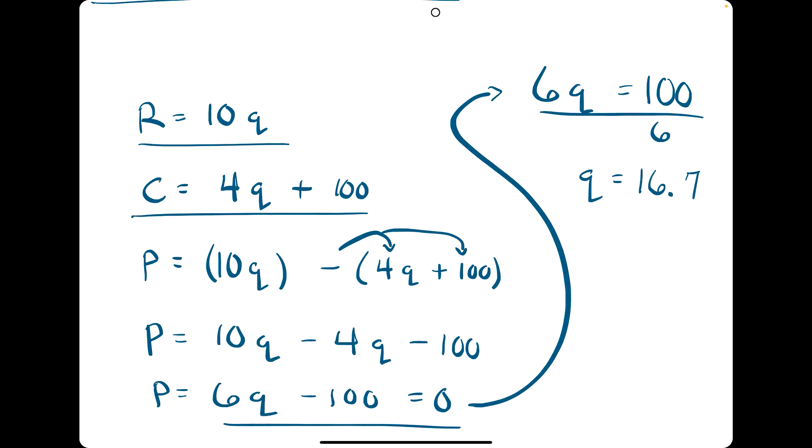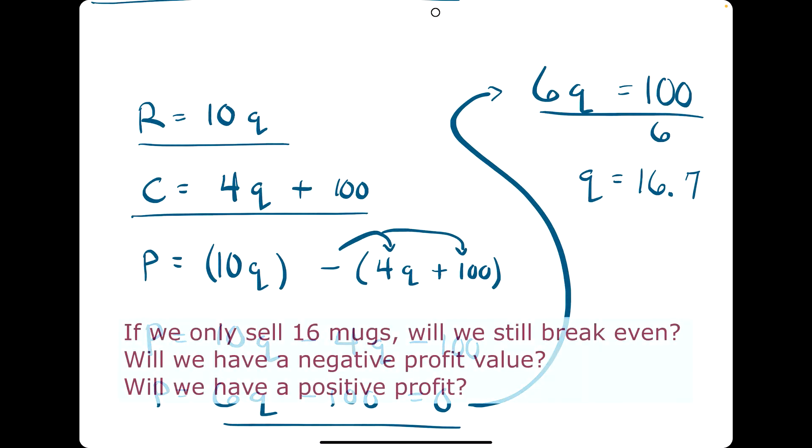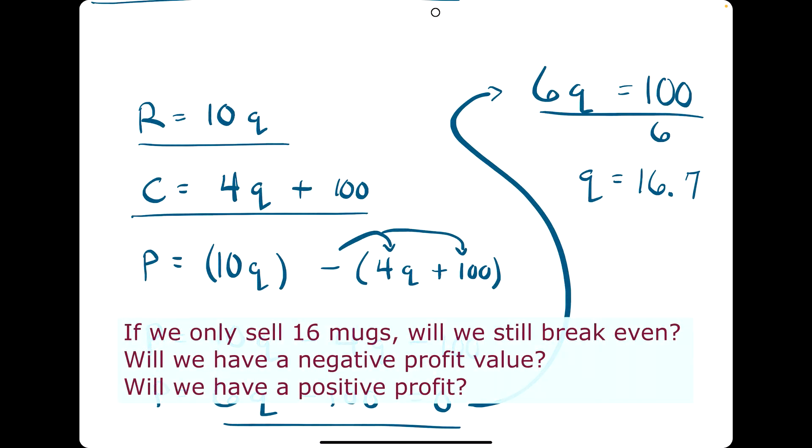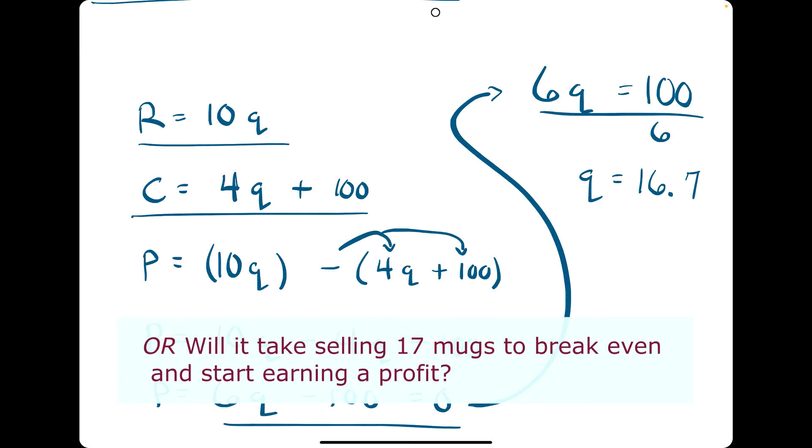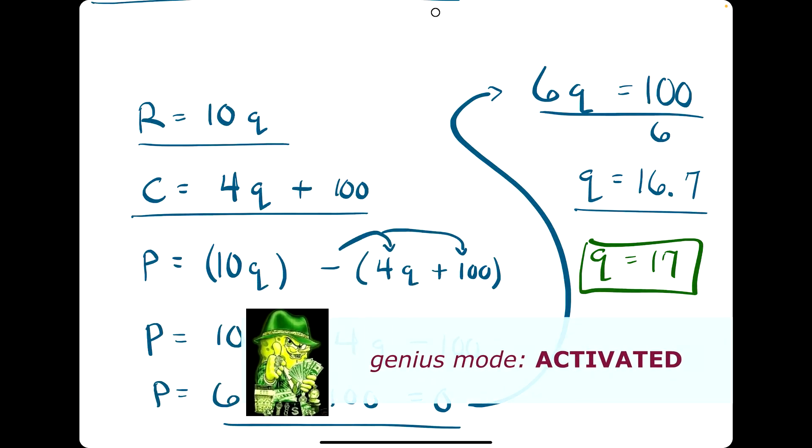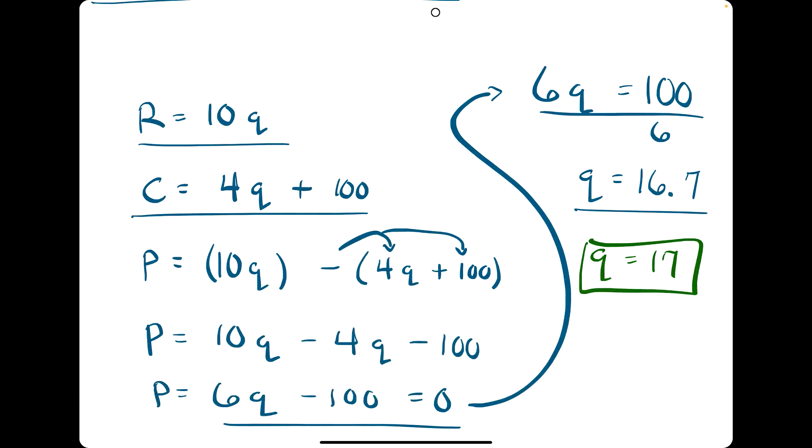An additional question to consider is this: what happens if we only sell 16 mugs? Will we still break even? Will we have a negative profit? Will we have a positive profit? Or will it take selling 17 mugs to actually pass that break even point and earn a profit? If you said 17, that is correct. We always want to round up if they ask anything about when we break even because it always takes selling and producing a whole number, and that is the next whole number up in order to earn a profit or break even completely.